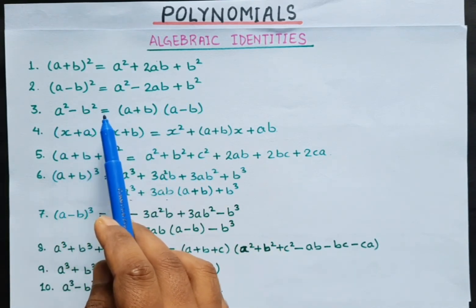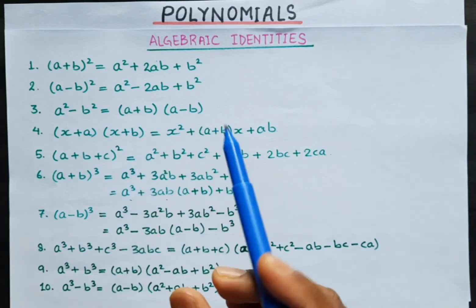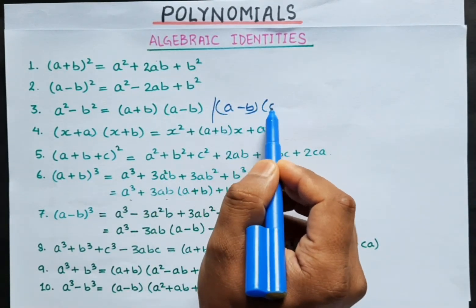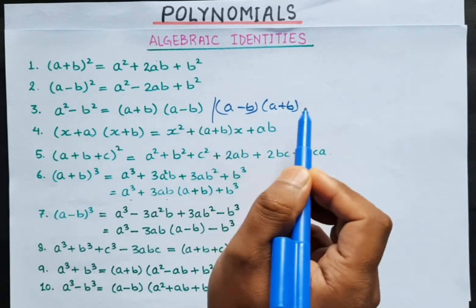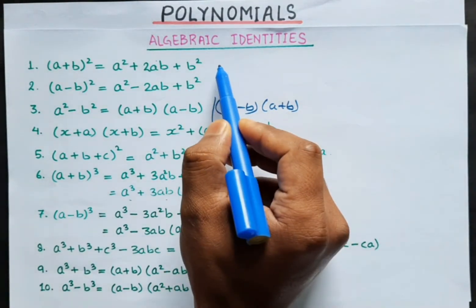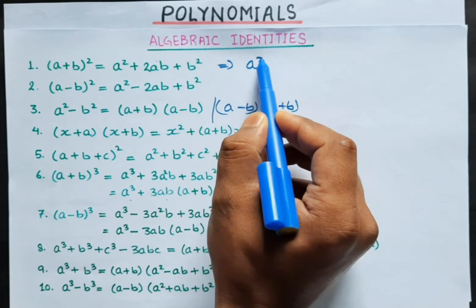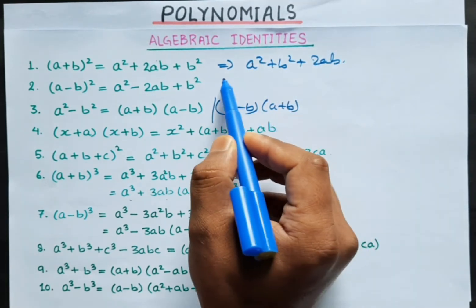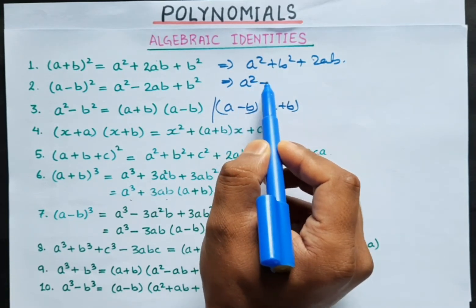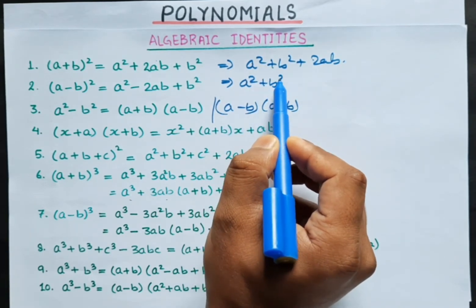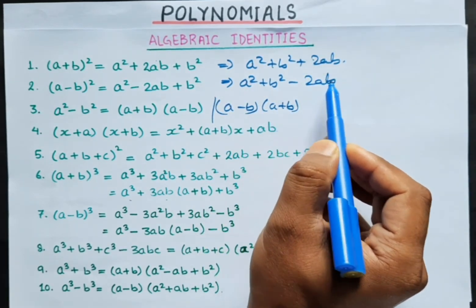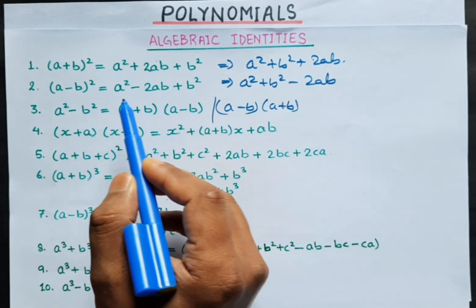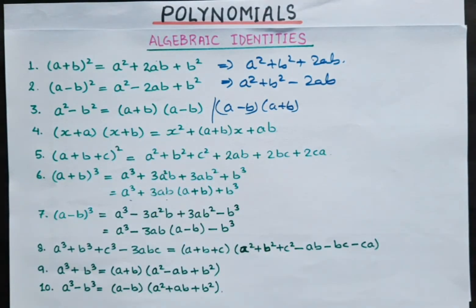And third, a squared minus b squared is equal to (a + b)(a - b). Note: this is (a - b)(a + b) — do not be confused. So, (a + b)² is similar to a squared plus b squared plus 2ab, and (a - b)² is similar to a squared plus b squared minus 2ab. We have a negative sign in the second and a positive sign in the first — okay, we have to remember that.